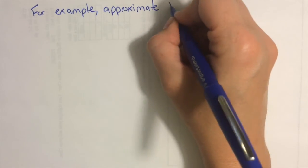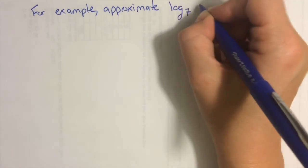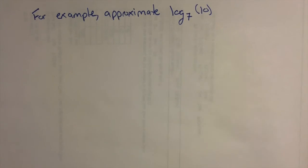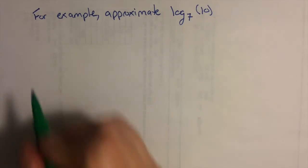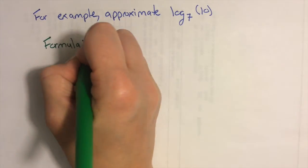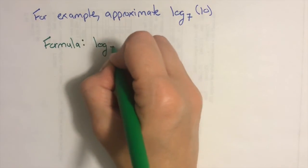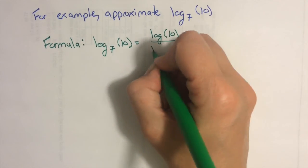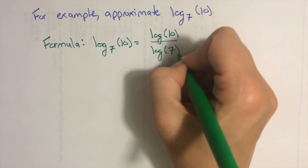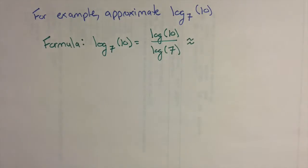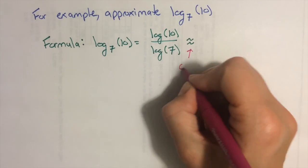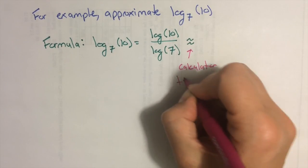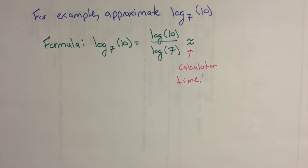Let's go ahead and do an example using that change of base formula. We're going to find log base 7 of 10. Using the change of base formula, log base 7 of 10 becomes log of 10 over log of 7. When I punch that into my calculator, I get about 1.18.